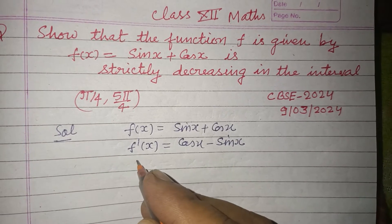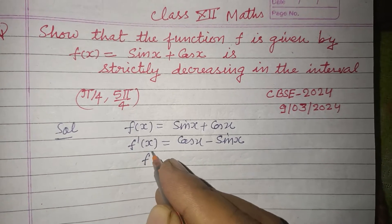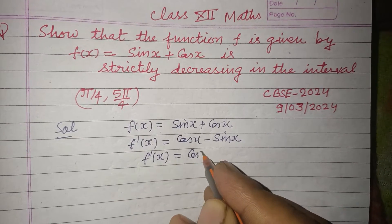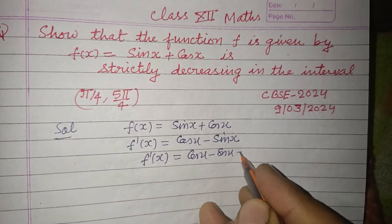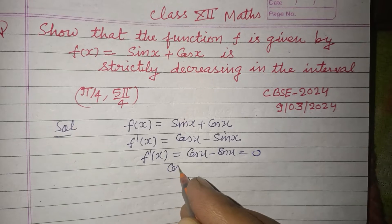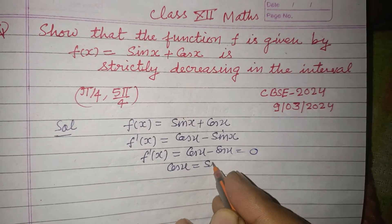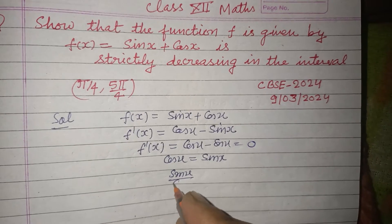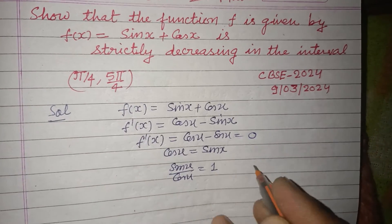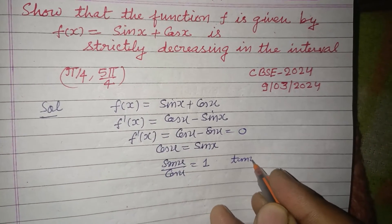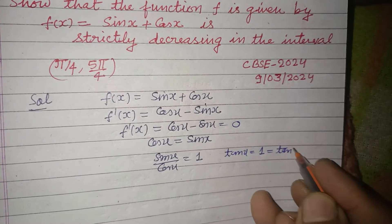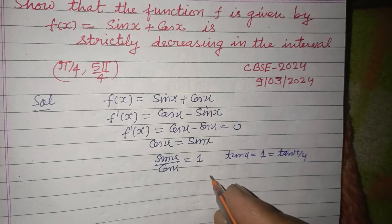For decreasing or increasing function, f'(x) = cos x - sin x = 0. So it means cos x = sin x, or sin x over cos x = 1. It means tan x = 1 = tan π/4.